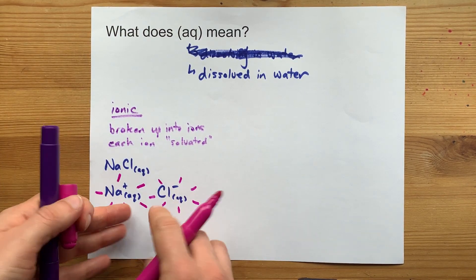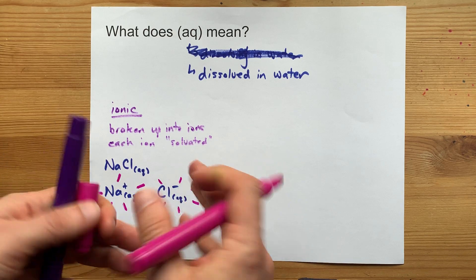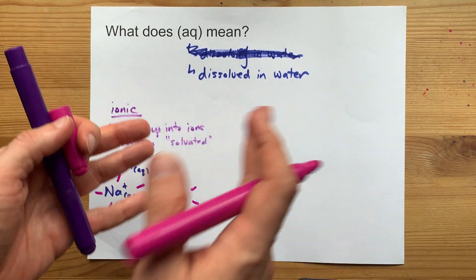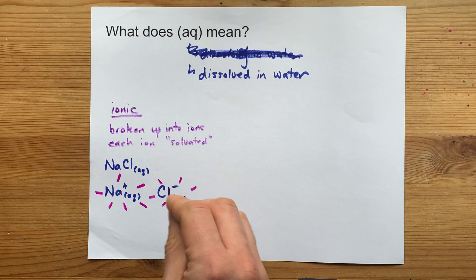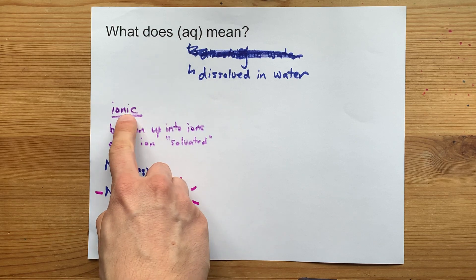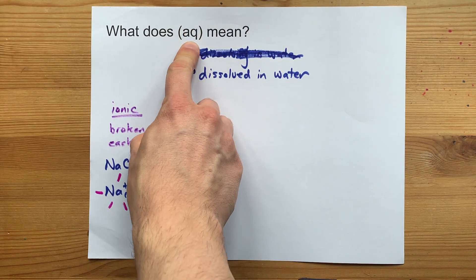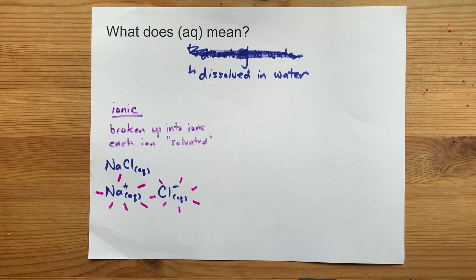How many water molecules surround each ion depends on its size and its charge and stuff like that. But long story short, an ionic compound that is aqueous or dissolved has been broken up into its ions.